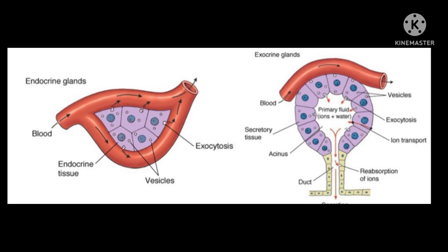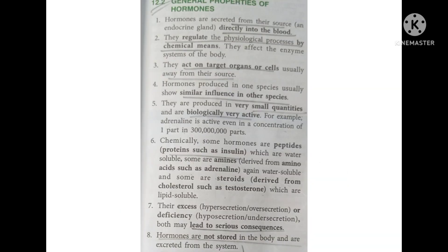Let us now look at the general properties of hormones. Endocrine glands secrete hormones that go directly into the blood. These hormones regulate physiological processes by chemical means, as they affect enzyme systems of the body. They act on target organs or cells, usually those away from their source. Hormones produced in one species usually show similar influence in other species. They are produced in very small quantities as they are biologically very active.